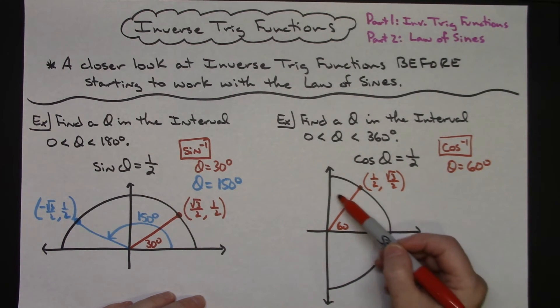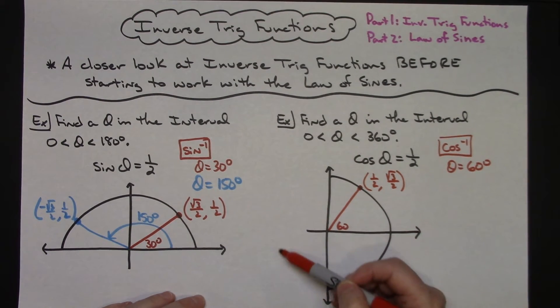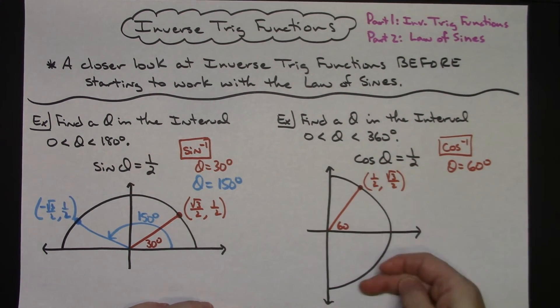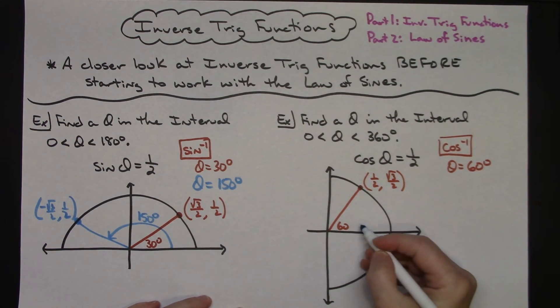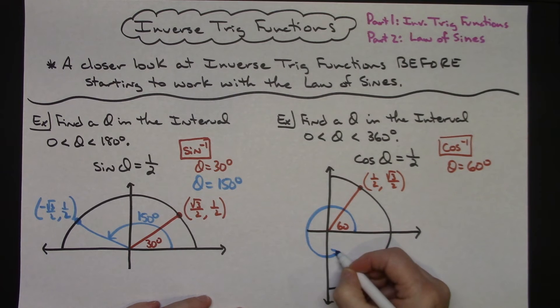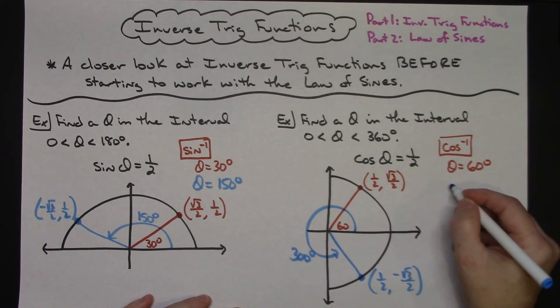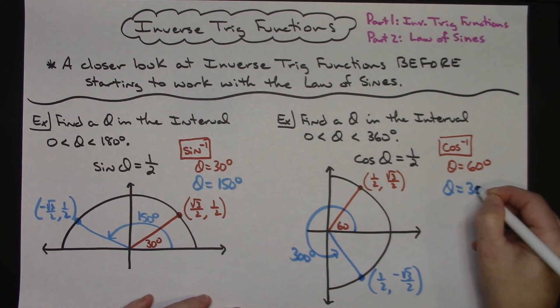Now the question is, is there any place else going all the way around where I can find a positive one half? It can't be in quadrants two or three because the first coordinates would be negative. We're looking in the fourth quadrant, and there is one because this is symmetrical. Going all the way around, it's 300 degrees with the same ordered pair: one half and negative square root of 3 over 2. A second answer is theta equals 300 degrees.